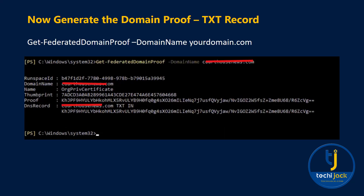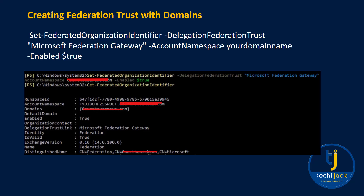Now we need to generate the domain proof, which is a TXT record. Run the commandlet Get-FederatedDomainProof with your domain name. Once you run it, you will get the ID, domain name, thumbprint, and the proof value — a string like 'khj...' which is your DNS record. Go to the external DNS of your domain and create a TXT record with that value. Make sure it is propagated properly before moving to the next step.